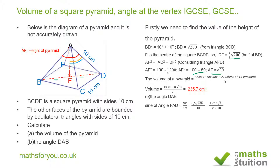So we have one half of root 200 divided by 10. We can write root 200 as root 2 times root 100. The square root of 100 is 10, so we have one half times 10 times root 2, divided by 10. The tens cancel out, leaving root 2 divided by 2, which equals 1 over root 2.